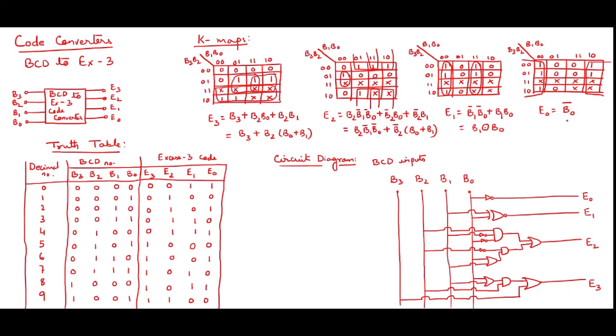That is giving me B1 XOR B0. And here I am getting 1 octet. That is B0 complement. And now, I have designed the circuit for that. This B3, B2, B1 is the input, B3 input that I have taken vertically.